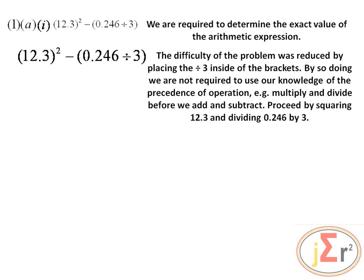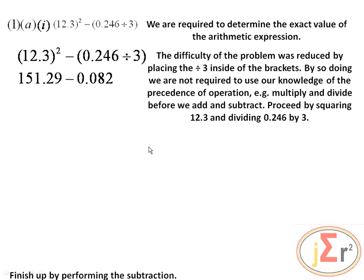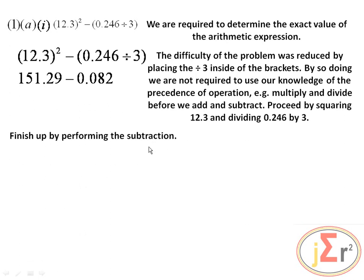It is not necessary for the brackets to have been included because by the precedence of arithmetic operations, we would have been required to divide before we subtract. So we are going to square 12.3 and divide 0.246 by 3. We are then going to finish up by performing the subtraction — subtracting 0.082 from 151.29.